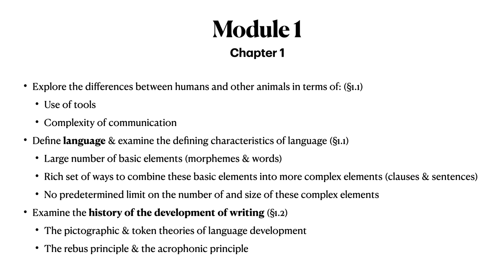In Section 1.1, we will define the term language and examine its defining characteristics. Every human language is composed of a large set of basic, meaning-bearing elements, and every language has a rich set of ways these basic elements can be combined into more complex elements such as clauses and sentences. These often involve recursion. Critically, there is no arbitrary predetermined limit on the number of utterances that can be formed, nor on the size of those utterances.